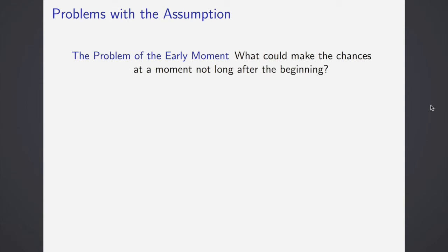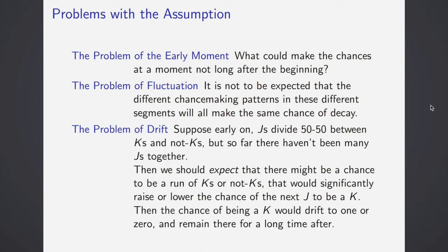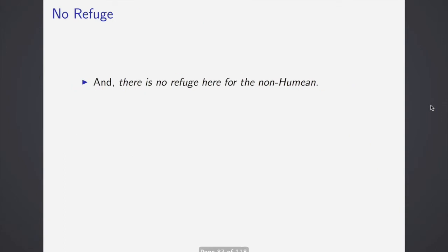There's the problem of the early moment. What could make the chances at a moment not long after the beginning? If you want to throw in a little physics, sort of imagine the moments just after the Big Bang. What could make the chances in a moment like that? Then there's the problem of fluctuation. It is not to be expected that the different chance making patterns in these different segments will all make the same chance of decay. And finally, there's the problem of drift. Suppose early on J's divide 50-50 between K's and not K's, but so far there haven't been many J's together, then we should expect that there might be a chance to be a run of K's or not K's that would significantly raise or lower the chance of the next J to be a K. Then the chance of being a K would drift to one or zero and remain there for a long time after.